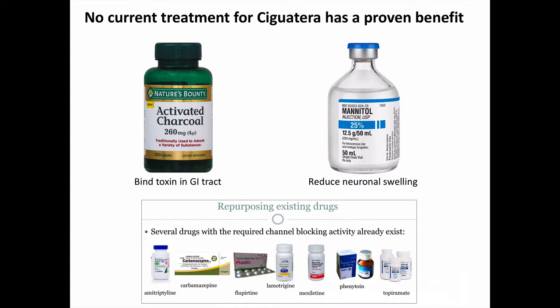Treatment for ciguatera poisoning remains primarily supportive, because no treatment has yet been found to have a proven benefit. If you catch the ingestion early enough, enteral-activated charcoal might bind up the toxin before it's absorbed. If any therapy is used, it's most commonly IV mannitol, which at least has a possible beneficial mechanism of action through reducing neuronal swelling. And since ciguatoxin activates sodium channels, there's a theoretical benefit to treating neurologic symptoms with sodium channel blockers. Many of the drugs used for this purpose are anticonvulsants, which block sodium channels to mitigate neuronal hyperactivity, which is exactly the problem with ciguatera as well.